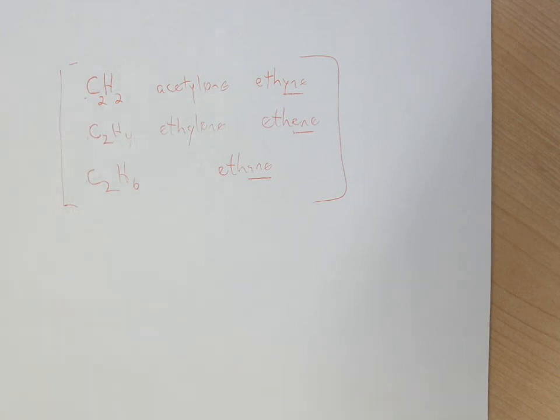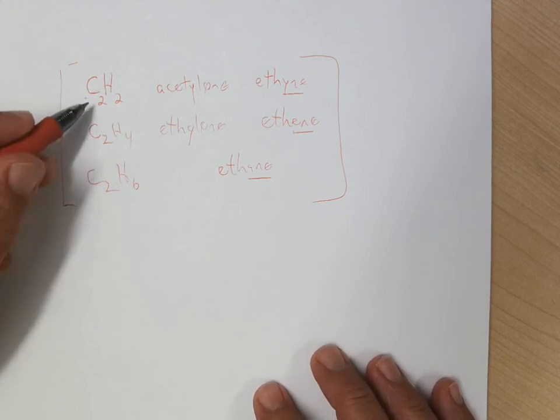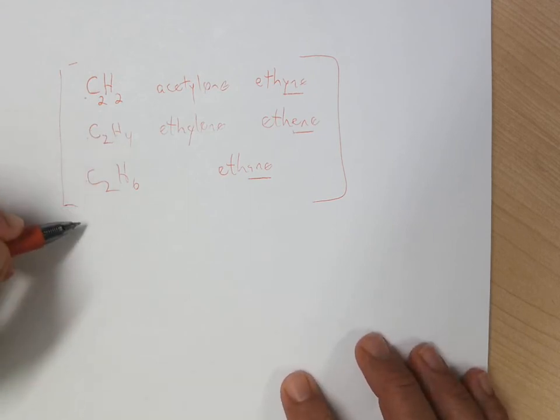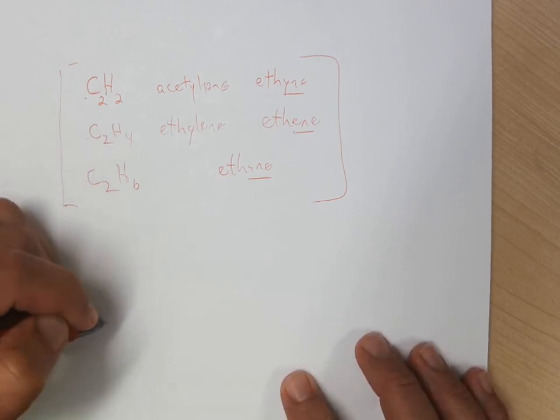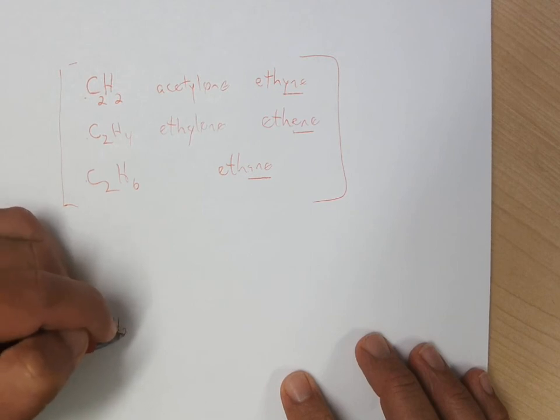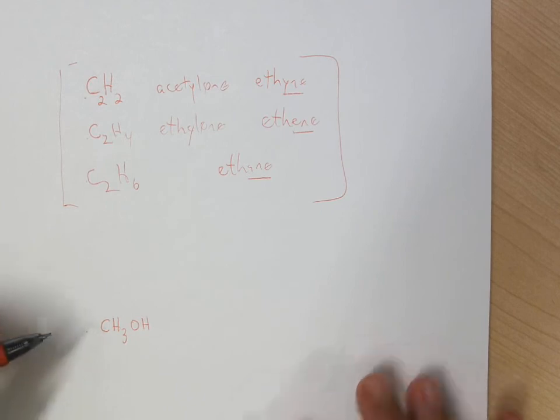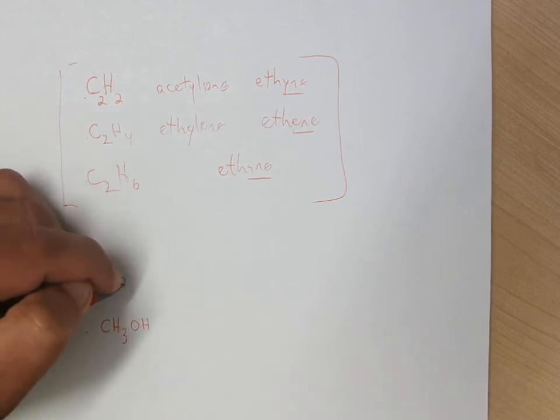and then if you wanted to have a heteroatom, something that's not carbons and hydrogens, the examples I would typically do are going to be CH3OH,